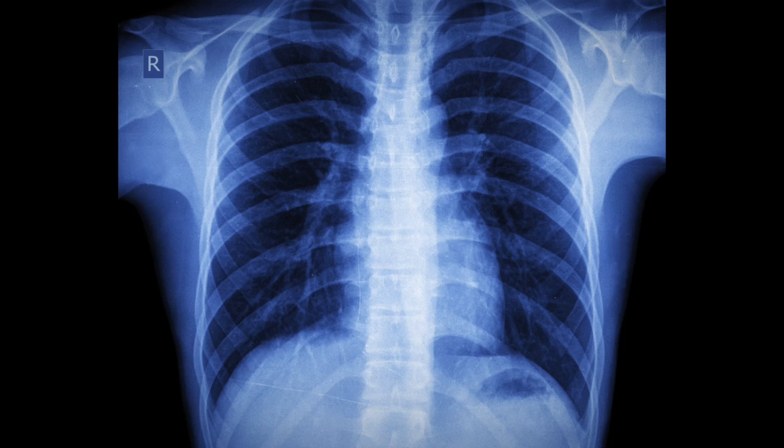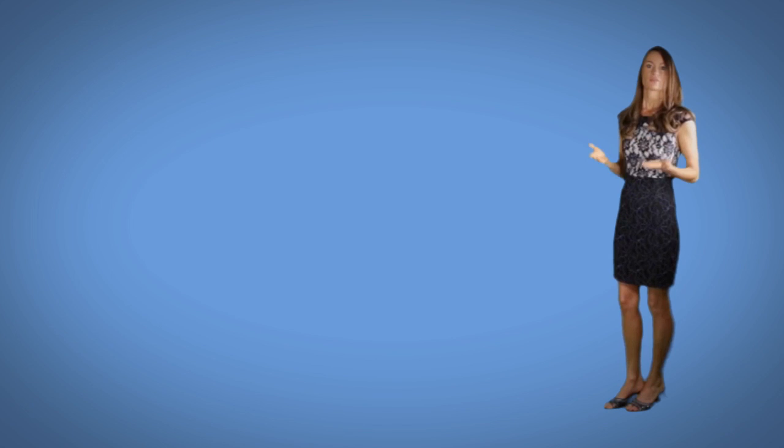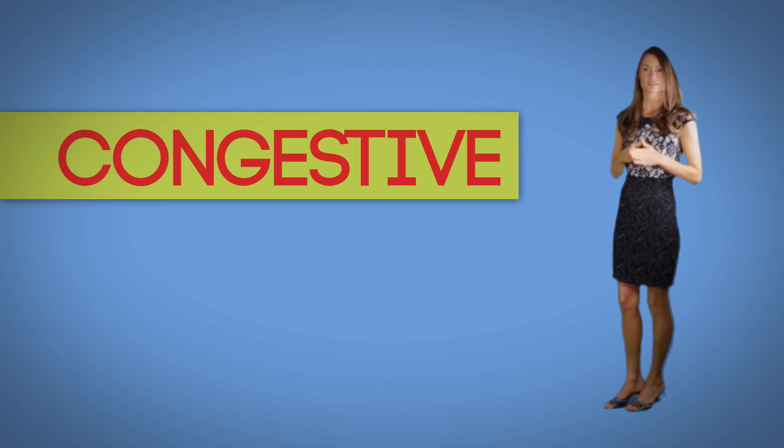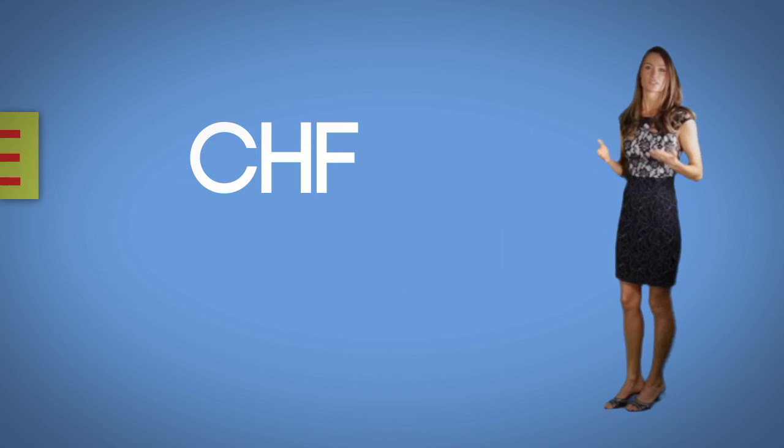Fluid may build up in the lungs, liver, gastrointestinal tract, and the arms and legs. Thus, it is called congestive heart failure which you will see abbreviated many times to CHF.